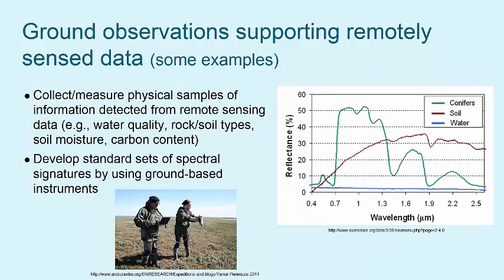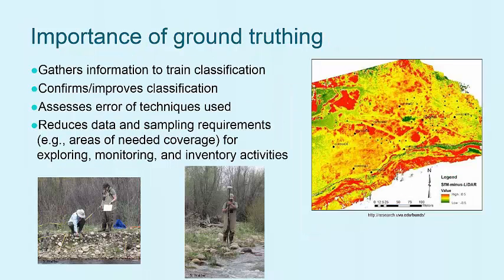Collecting information on the ground can both confirm assessments made using remote sensing software and help to develop standards of the spectral signature of features. Ultimately, ground truthing is an integral part of using remote sensing data, and is critical in creating and maintaining the use of high-quality data while benefiting from the potential of reduced costs and time expenditures to obtain the data, and the increased extent of data coverage.